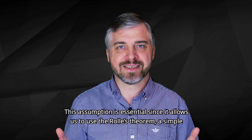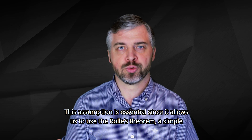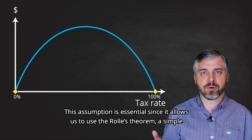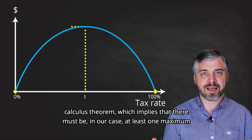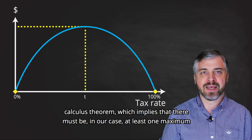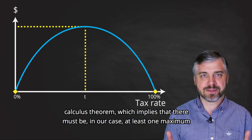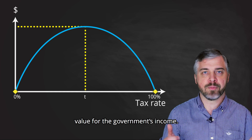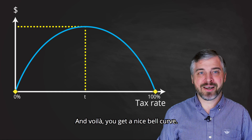This assumption is essential since it allows us to use Rolle's theorem — a simple calculus theorem which implies that there must be, in our case, at least one maximum value for the government's income. And voilà,